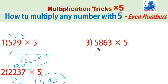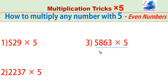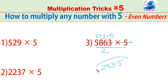See one more example. 5,863 into 5. Make it half — divide this number by 2: we get 2931. And keep 5 at the end. 29,315 is the answer.